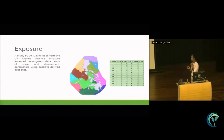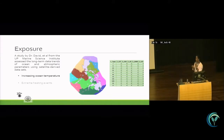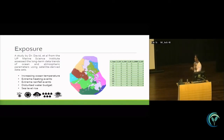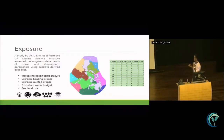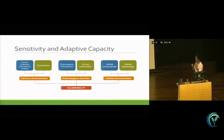For the exposure layer, there's a study by Dr. Laura David et al. from the University of the Philippines Marine Science Institute, in which they assessed long-term data trends of ocean and atmospheric parameters using satellite-derived data sets. They checked effects from increasing ocean temperature, extreme heating events, extreme rainfall events, disturbed water budget, and sea level rise. They divided the Philippines into different clusters and assigned scores from one to five — five being the highest — for the exposure of these areas to different climate change-related events. We used these scores to determine the exposure layer for the resource.